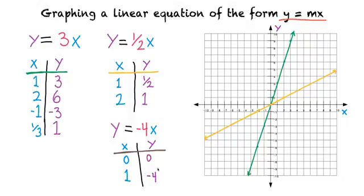Then we could plot those solutions right here and right here. And finally, we could connect those with a straight line to find all the solutions to the equation y equals negative 4x. And since this is a negative slope, our line is sloping downwards instead of upwards.